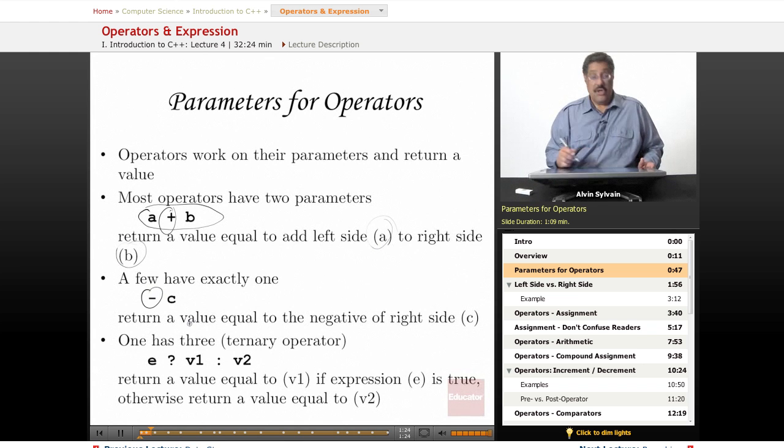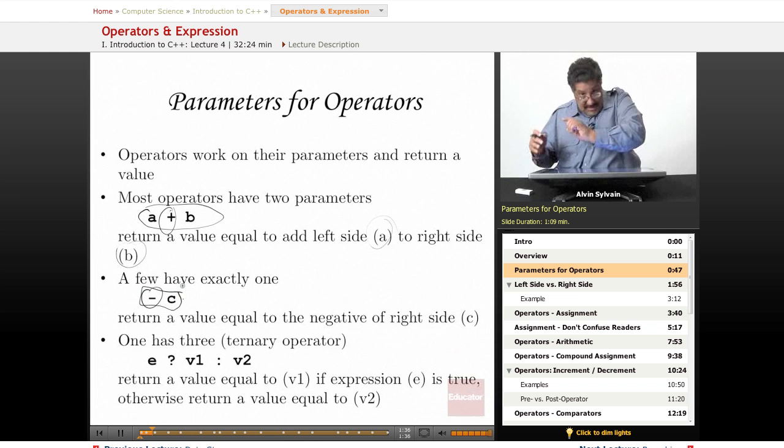Some operators, like this one, is a unary operator. It has just one parameter. It returns the value on its right side. In this case, it negates whatever that value is. If it was a positive number, it makes it negative. If it was a negative number, it makes it positive.